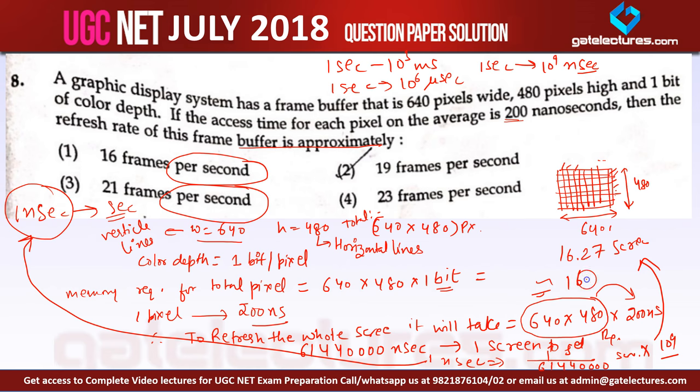Which is very close to 16 screens per second. Remember we are not getting a perfect answer. We are getting an answer which is 16.27 frames in 1 second, which is near to 16 frames per second. So for this question the correct answer is option number 1.